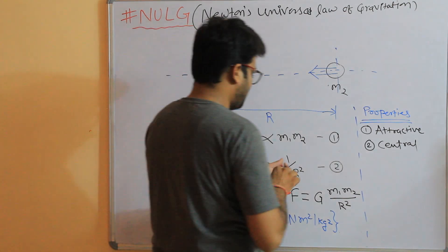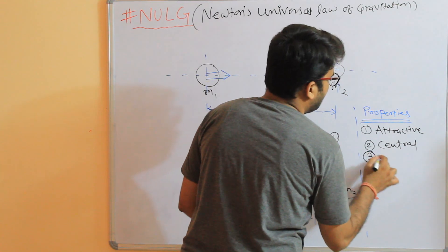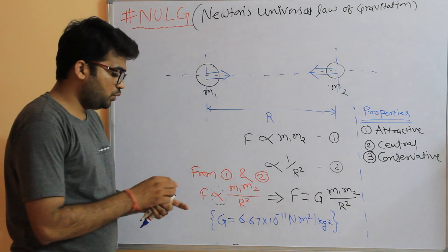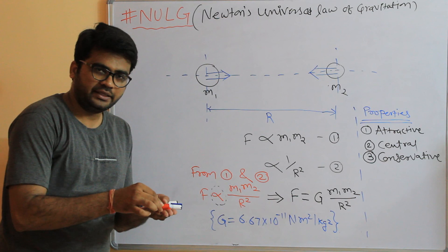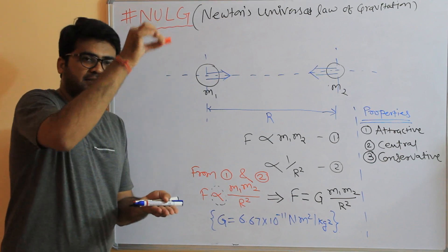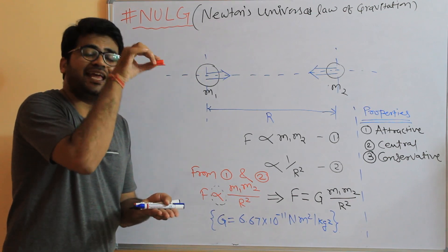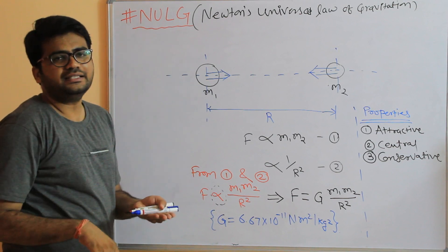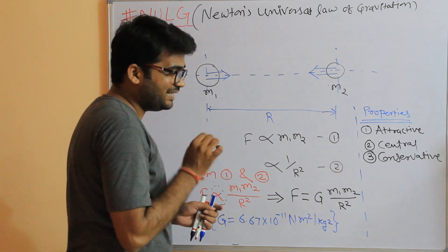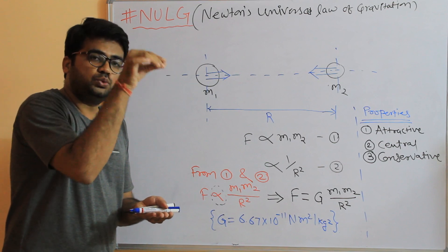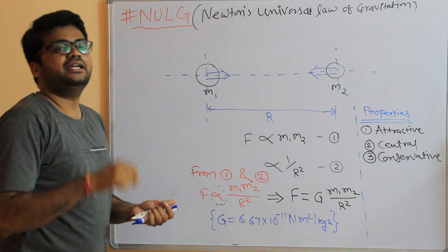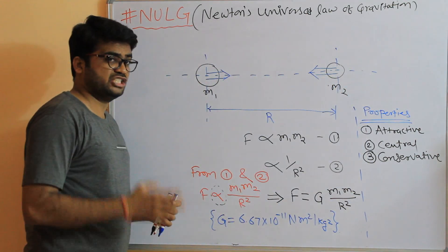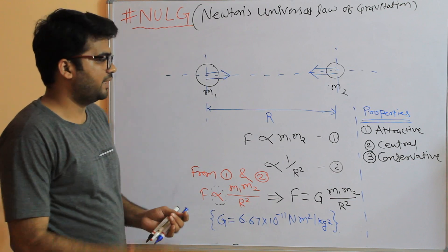Third property: it is a conservative force. What does this mean? If you lift a body from point A to point B by any path — this path, or that path — the gravitational force does not depend on the path taken. That is the definition of a conservative force: a force which does not depend on the path taken.